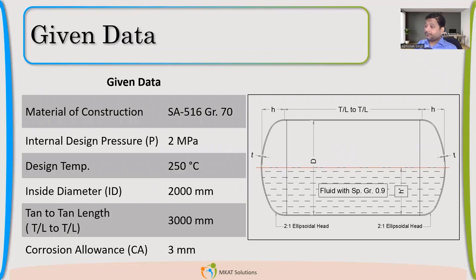So some data. If you have calculator with you, I'll recommend do the calculation parallelly. Material of construction, we have taken SA-516 Grade 70. Internal pressure 2 MPa. Design temperature 250 degrees Celsius. ID is 2000. Tan to tan length is 3000. Corrosion allowance 3 mm. There is also static head if you see here. And the fluid is with specific gravity of 0.9.